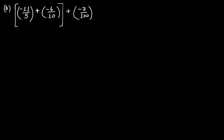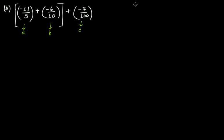In this example, I have taken all negative rational numbers. A is the first, B is the second, and C is the third. First I'm going to perform (A + B) + C. So I begin: A + B is minus 11/5 plus minus 6/10.